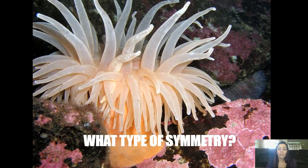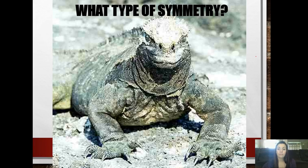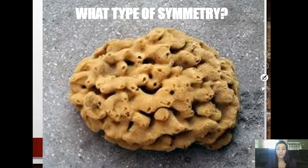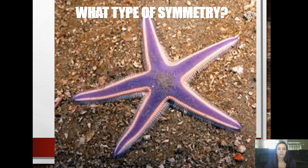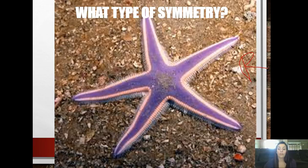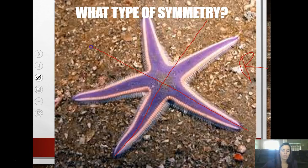Let's do a quick quiz on symmetry. If you guessed radial for the first one, you are correct. The next is bilateral. For the sponge, remember sponges don't have anything, so it's asymmetry. A tiger - right down the middle - bilateral. And a starfish is radial. You may think they have five arms, but you divide one of the arms in half, and no matter which way you divide it, it's symmetrical.